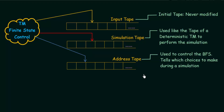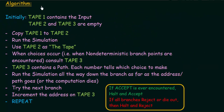Now we are in a position to write the algorithm for how this actually works. Initially, tape 1 contains the input, while tape 2 (the simulation tape) and tape 3 (the address tape) are empty.